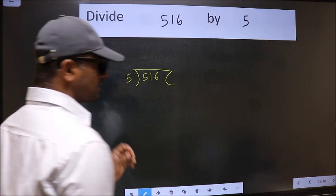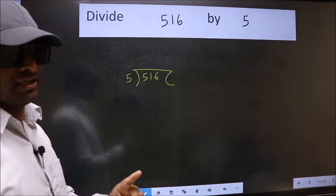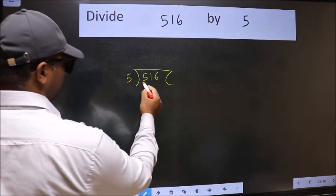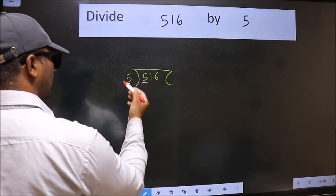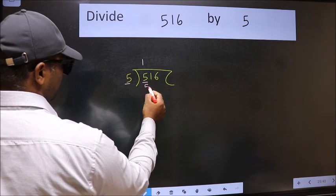This is your step 1. Next, here we have 5 and here also 5. When do we get 5 in 5 table? 5 times 1 is 5.